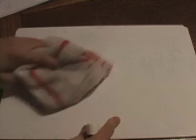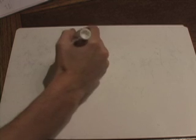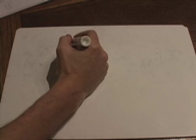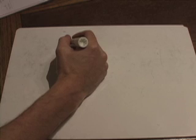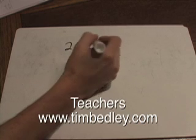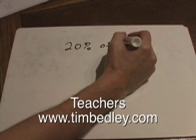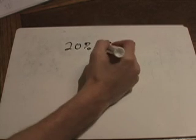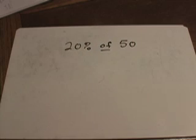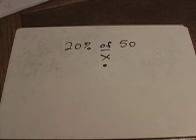Now we're going to learn how to do percent of a number. You're going to see problems like this quite a bit in math as you get up into the higher grades in school. Say 20 percent of 50 — how would you find 20 percent of 50? Well, the first thing you need to know is that the word 'of' means multiply in math, so we'll put an X there meaning multiply. Some of you might be using the dot to mean multiply.